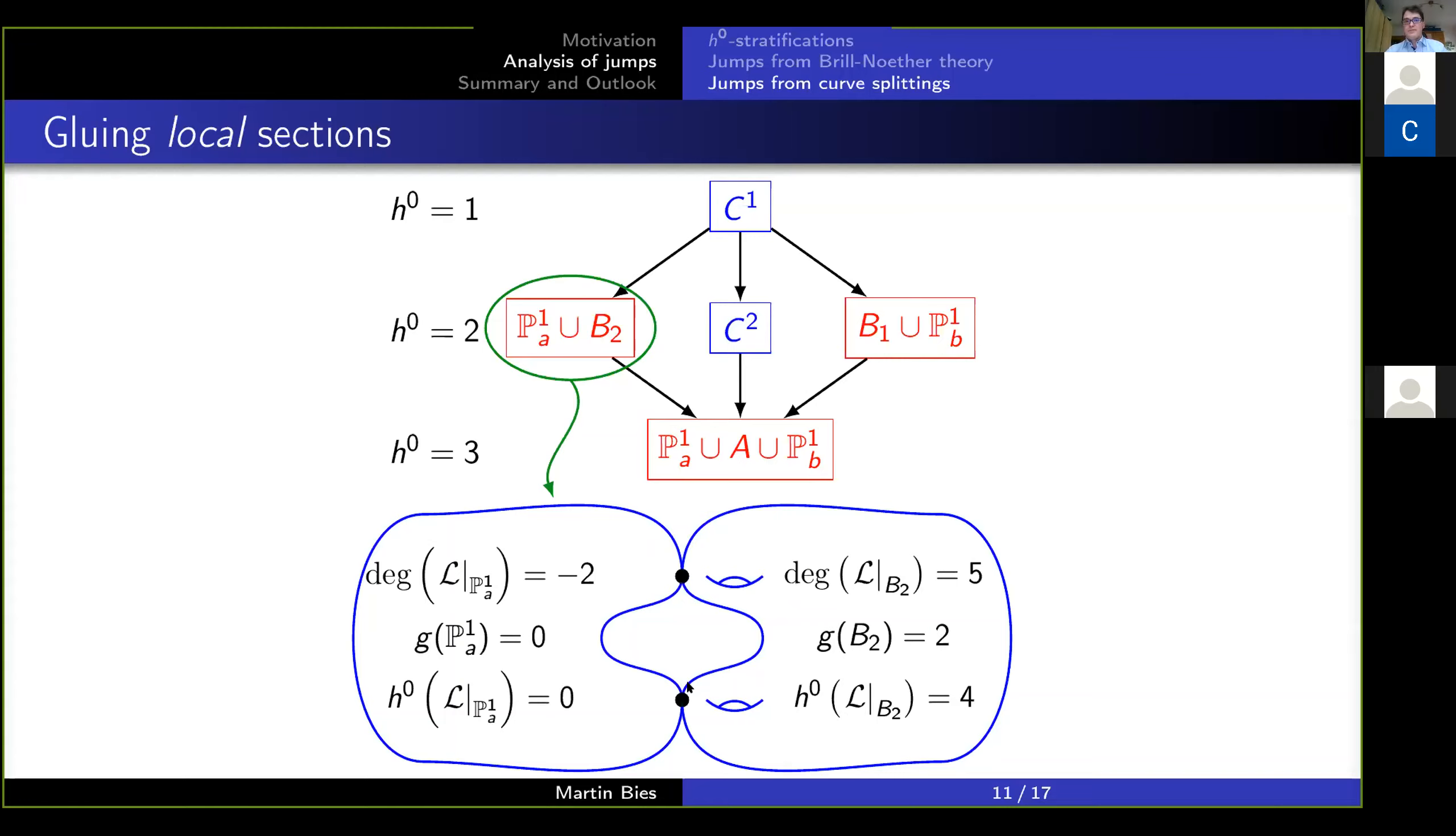In this case what we see is on the left a genus 0 curve, on the right a genus 2 curve, intersecting in two points. Then you compute the degree of the line bundle, which is just a topological quantity, namely intersection number between the line bundle divisor and the curve. On the left that's minus 2, on the right it's 5. Then you realize there are vanishing theorems in literature which tell you that on the left, due to the degree being negative, you cannot have sections except for the section identically 0.